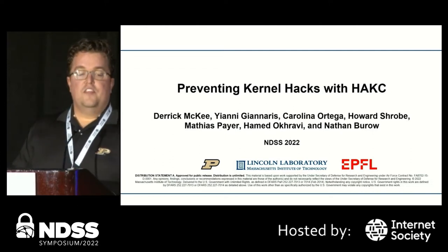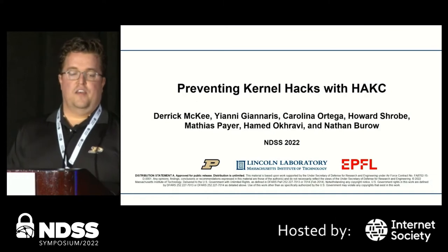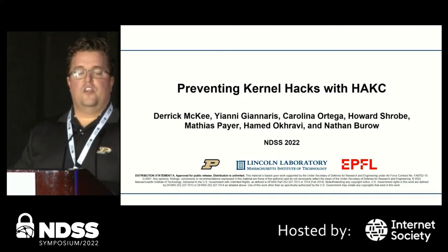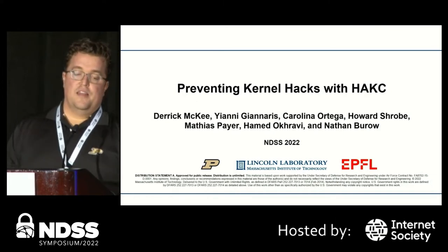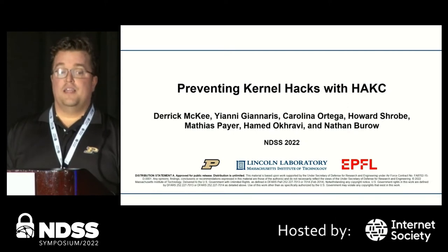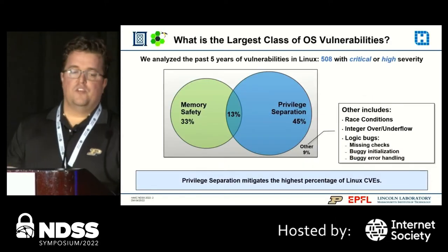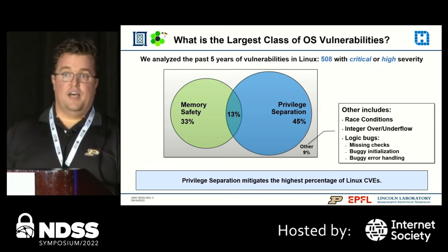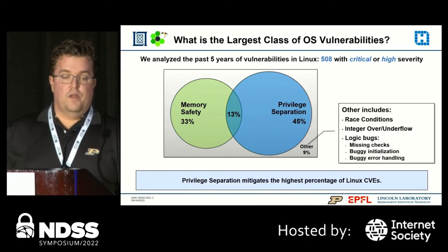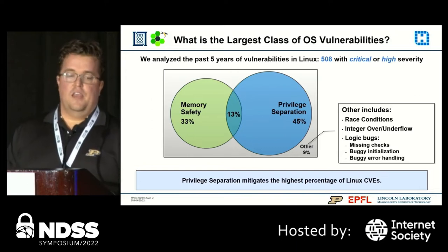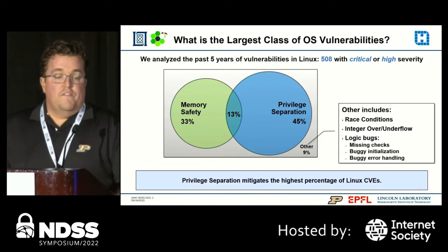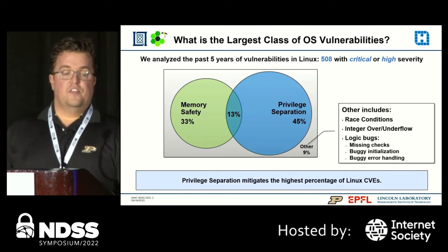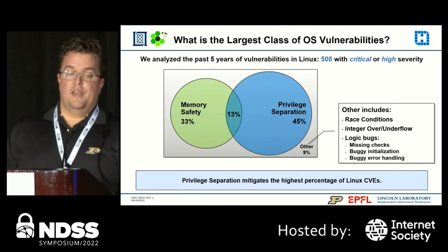HACKS enforces a least privileged policy on monolithic software, which is a widely used security technique that has been proven difficult to apply in system software. As motivation for this work, we analyzed the last five years of high severity CVEs issued for the Linux kernel and determined what mitigation, if any, would have prevented the exploit. We found that most of the CVEs could have been mitigated had a least privileged policy been imposed.